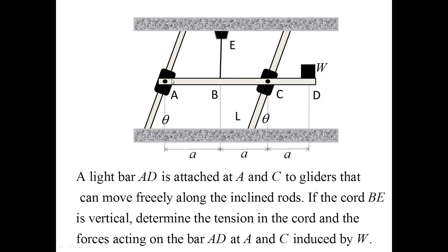A light bar AD is attached at A and C to gliders that can move freely along the inclined bars. If the rod BE is vertical, determine the tension in the cord and the forces acting on the bar AD at A and C induced by a weight W.